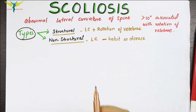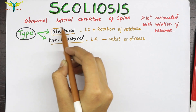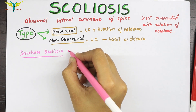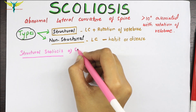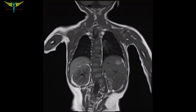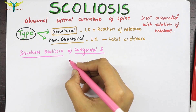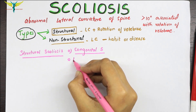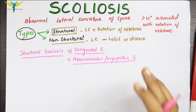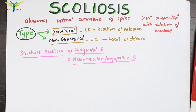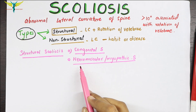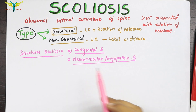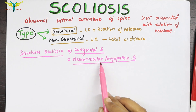The causes of structural scoliosis include congenital scoliosis, which is formed due to a bone abnormality present at the time of birth. The second cause is neuromuscular or myopathic scoliosis, which results from abnormal muscles or nerves — that is, neuromuscular refers to abnormal nerves or abnormal muscles.